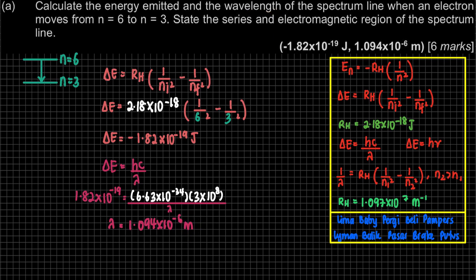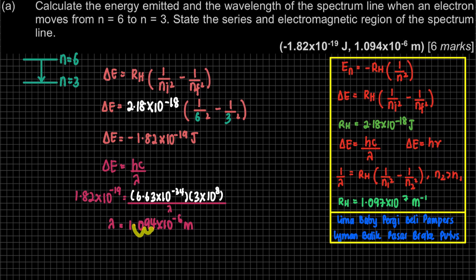Since the question does not specifically mention which unit, we'll leave it as meters. But if they ask for nanometers — nanometer means exponent negative 9 — the answer would be 1.094×10⁻⁶ meters converted, or simply 1.094 micrometers. If the question did ask for nanometers, you'd answer accordingly. Since it doesn't mention anything, meters is also accepted.